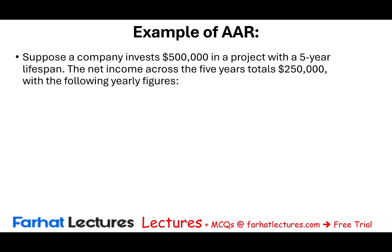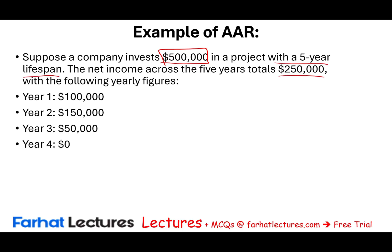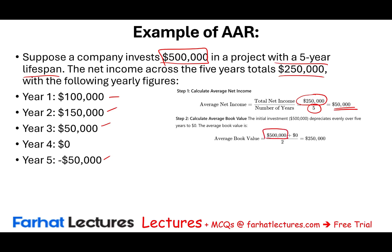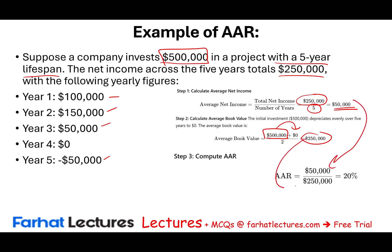Let's look at an example. Suppose a company invests $500,000 in a project with a five-year lifespan. The net income over five years totals $250,000: year one $100,000, year two $150,000, year three $300,000, and year five a loss of $50,000 — bringing total net income back to $250,000. The average income over the life of the project is $50,000 per year. The average book value is ($500,000 + $0) divided by 2, equaling $250,000.